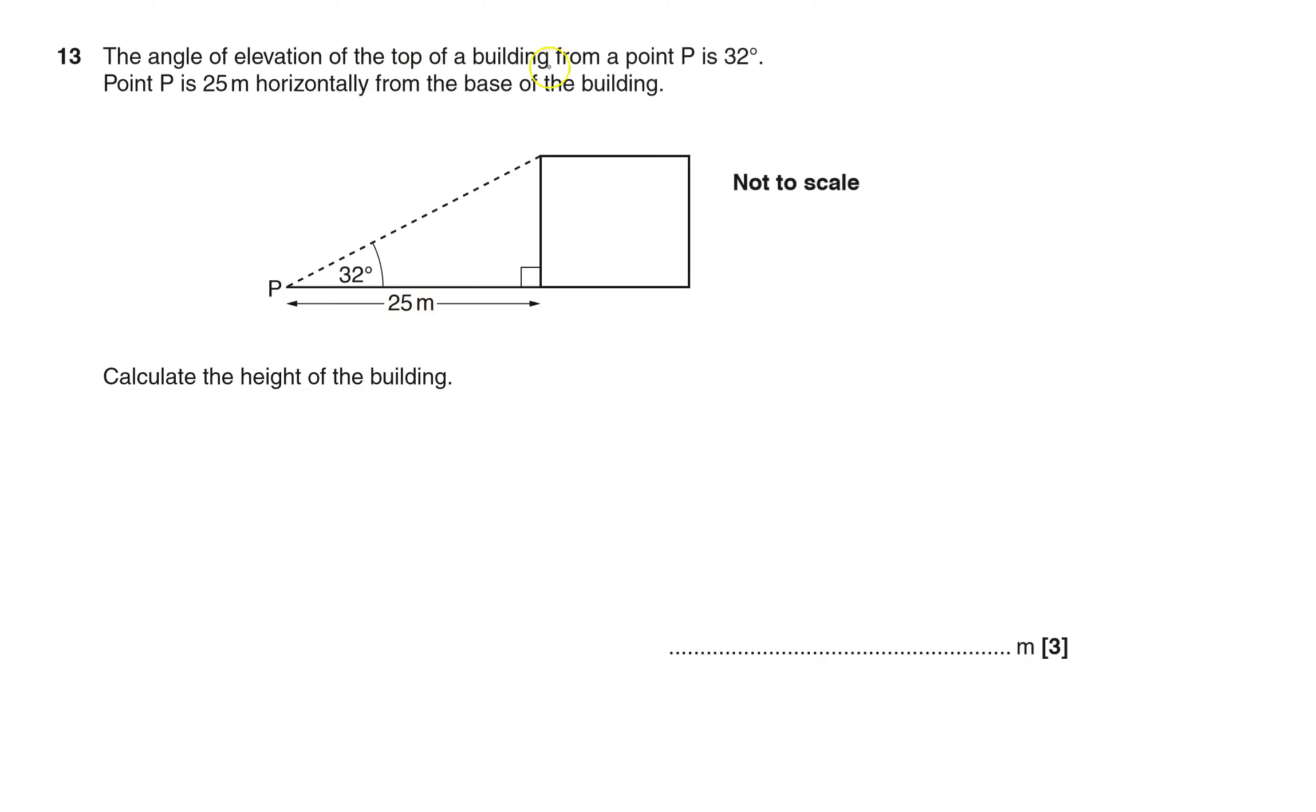The angle of elevation of the top of the building from point P is 32 degrees. It's quite nice for them to dot the line in there. They don't have to do that. They could just say it's 32 degrees, then you'd have to put it in yourself. Point P is 25 meters horizontally from the base of the building. Calculate the height of the building, so I need to calculate this.